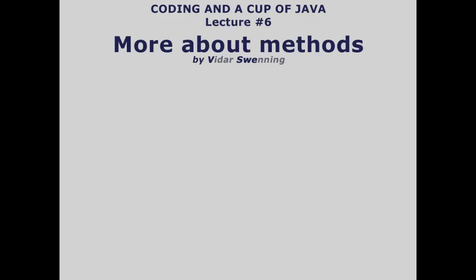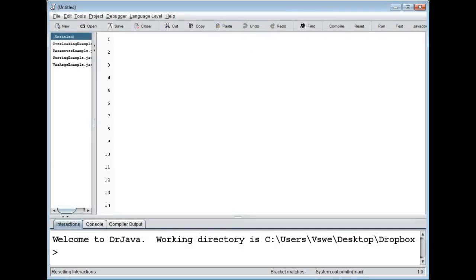Welcome back to Coding in a Cup of Java, lecture number six, more about methods. Before the break we were talking about method overloading, so we could have different methods with the same name but with different parameter lists. Now I'm going to show you a bigger example about how we can use it.